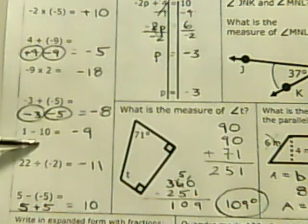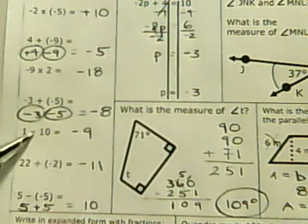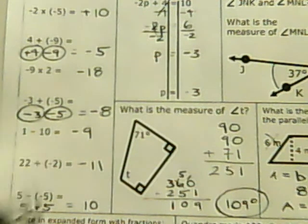The signs are different, so you subtract. 10 minus 1 is 9. We take the sign of the bigger one, which is negative 10, so it's negative 9.